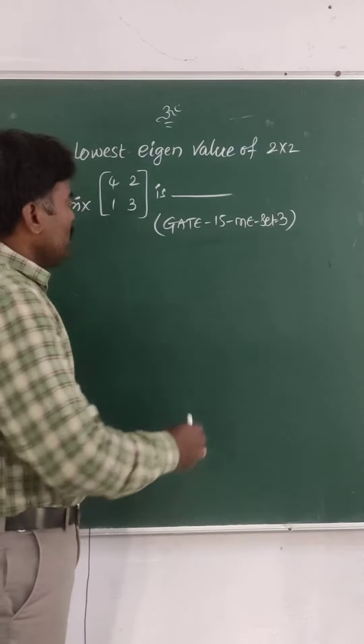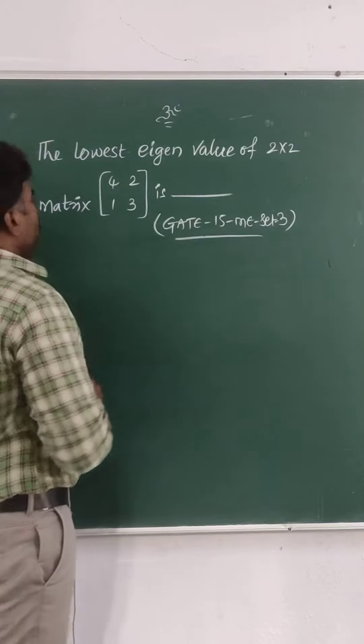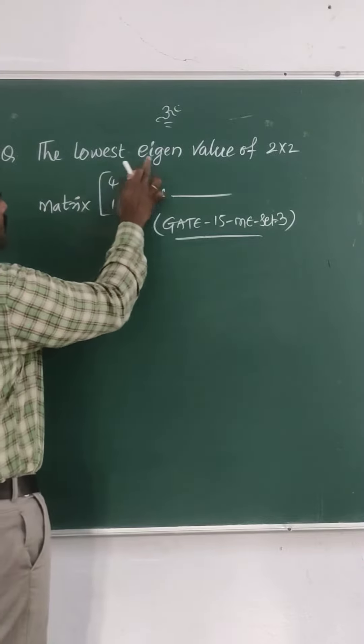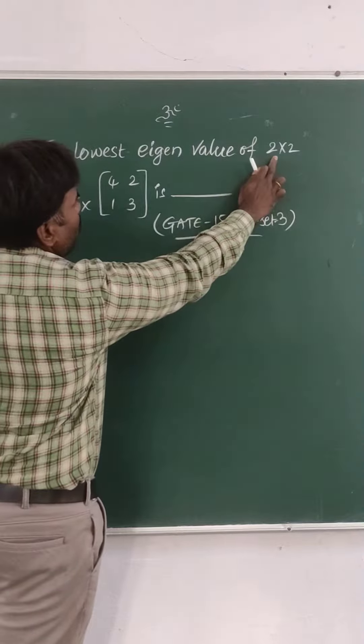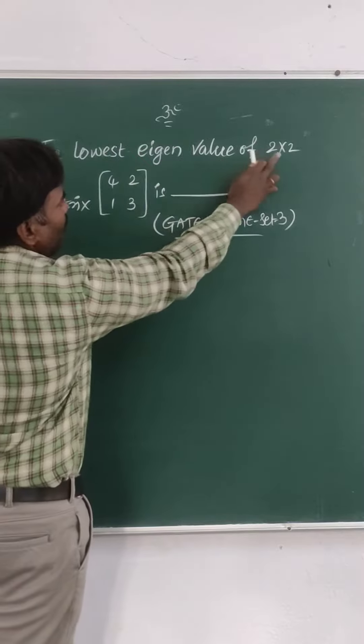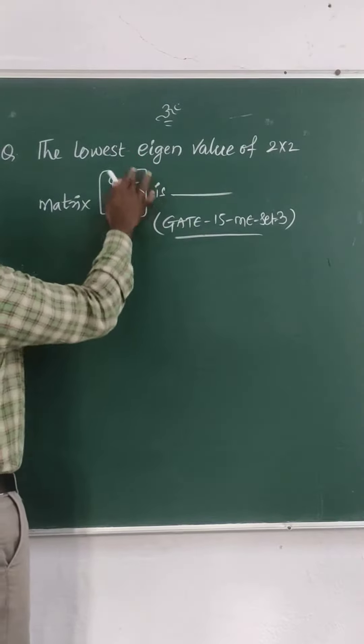Friends, in this video we are solving GATE 2015. The given problem is the lowest eigenvalue of a 2 by 2 matrix. Here they are given a 2 by 2 matrix.